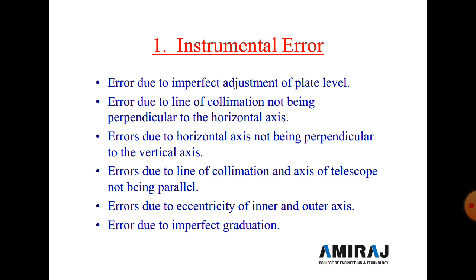Next is error due to the line of collimation and axis of telescope not being parallel — both should be parallel without any deflection for a true setup, but if they are not parallel it is an instrumental error. Also, error due to eccentricity of inner and outer axes, and error due to imperfect graduation — where horizontal and vertical discs are graduated in degrees, minutes, and seconds, but if the marking is imperfect or graduation distances between two angles are larger or shorter, that is also an instrumental error.